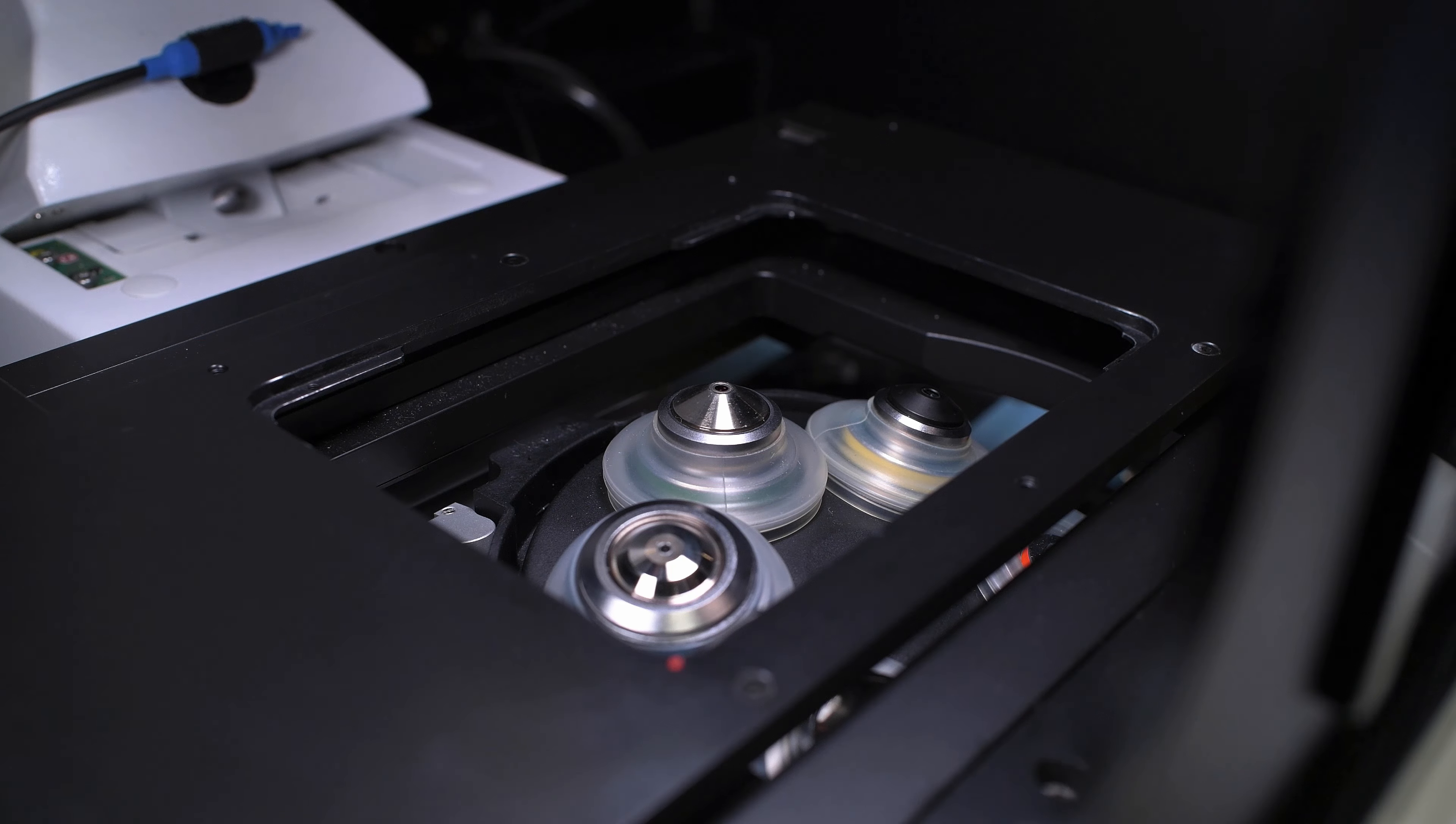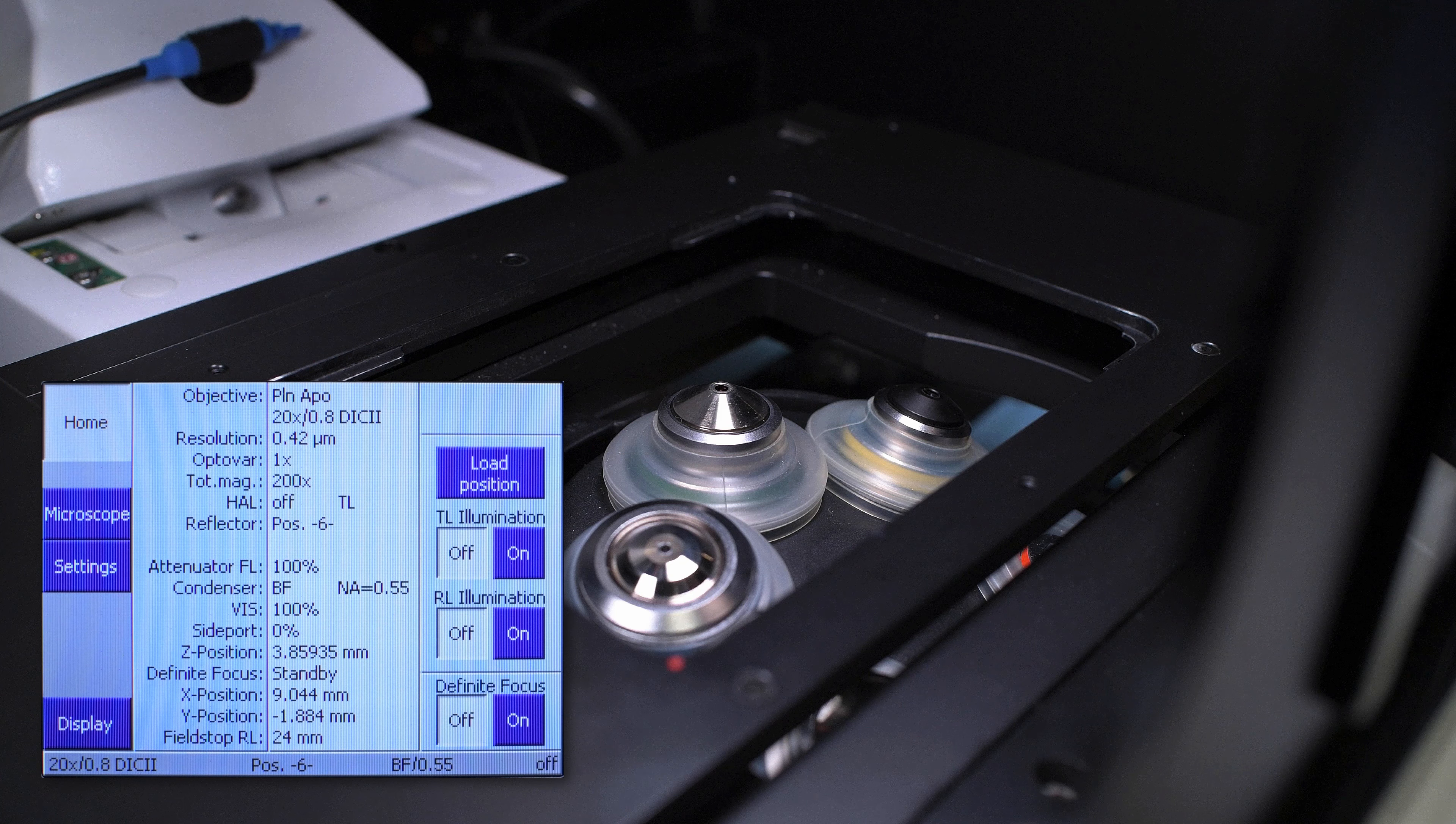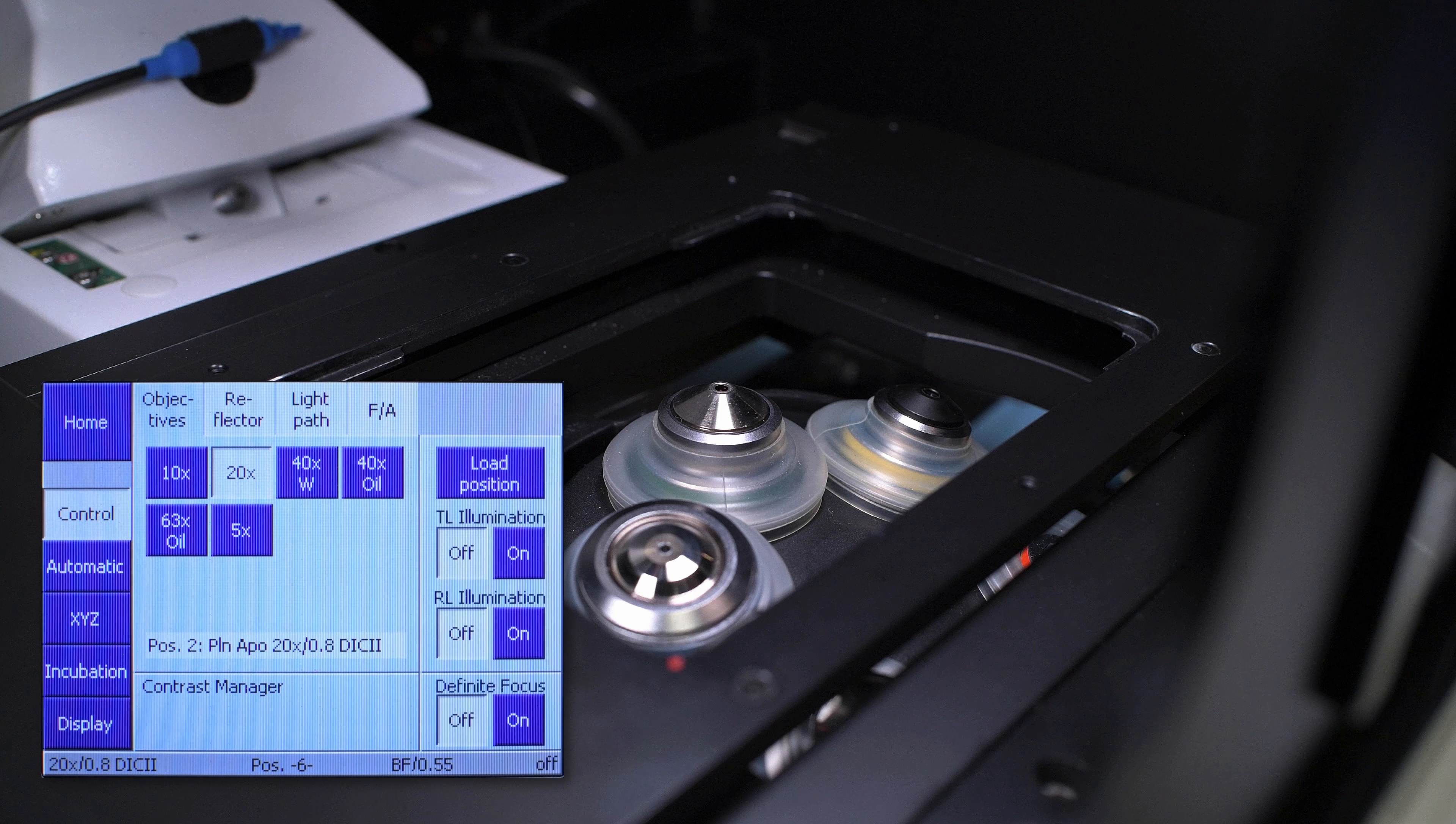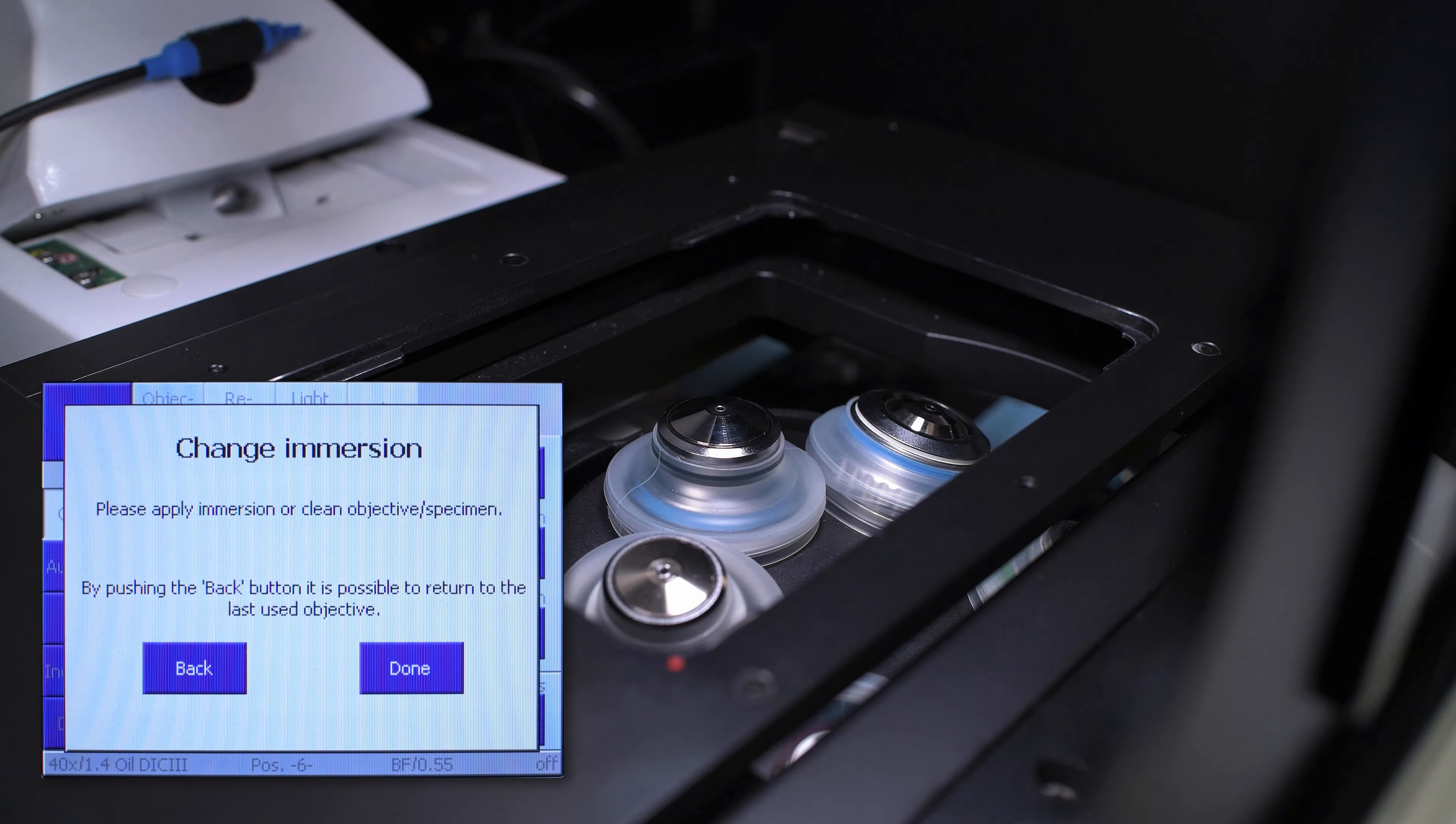Ensure that there is no sample holder mounted on the stage and that the area around the objectives is clear. To select the correct objective, locate the TFT display to the right of the microscope and make sure you are selected on the home screen. On the left hand side of the display, click on the microscope tab. From the control tab, select objectives from the top menu, then select 40x oil from the objective list. This action will move the objective focus down away from the specimen plane and then rotate the turret to the objective you chose.